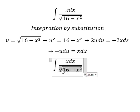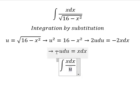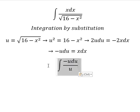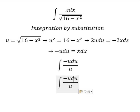So this one we change for u, dx we change for this one, and now we have negative du.